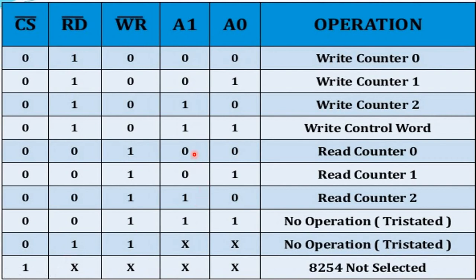For read operations, when the write signal is high and the read signal is active low, with counter selections 00, 01, and 10, the operations are: read counter 0, read counter 1, and read counter 2 respectively. When both A0 and A1 are high with read active low, the output is tri-stated (high impedance state — no connection between input and output). When chip select is high, regardless of other signals, the 8254 is not selected for operation.